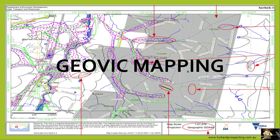G'day all, Mark from tryhardprospecting.com.au. Today I thought I'd talk about a fantastic mapping system from the Victorian State Government called GeoVic. It's a resource that contains over 800 plus layers which you can add to a custom map which you build and print and take you in the field.